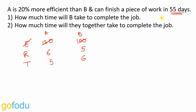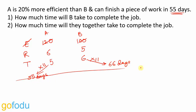A takes 55 days to finish the work — this 5 on the ratio scale corresponds to 55 days in actual, so there is a multiplying factor of 11. The same multiplying factor gives us time taken by B as 6 × 11 = 66 days. Moving on to the second part: how much time will A and B together take? We take A, B, and A plus B. Rate of A is 6, rate of B is 5, and rates can be added.